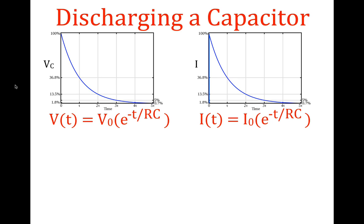Also, the voltage and the current are given as a percentage of the initial maximum voltage and current, not as some absolute voltage like 2, 3, 4, 5 volts or half an amp. The voltage is in percent of a maximum, same with the current, and the time is in time constants. This is the equation we use to calculate the voltage with respect to time across the capacitor as we're discharging the capacitor.